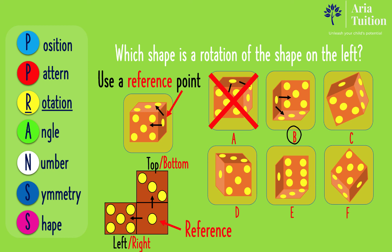For more 11 plus practice, let's go through the other options. In option C, five dots are to the right of the one dot, and three dots are on top of the one dot. Therefore, as five are to the right and three are on top, option C cannot be the correct answer.